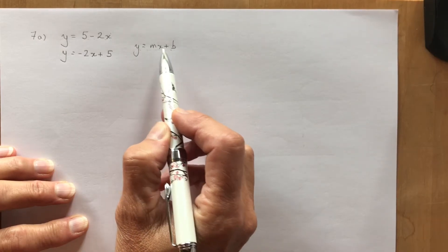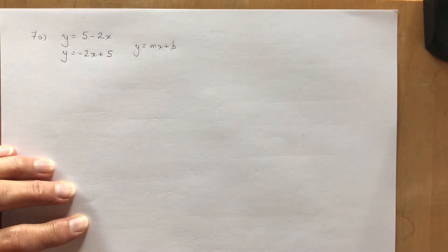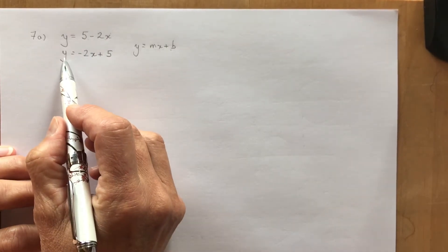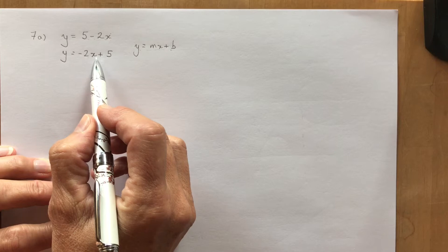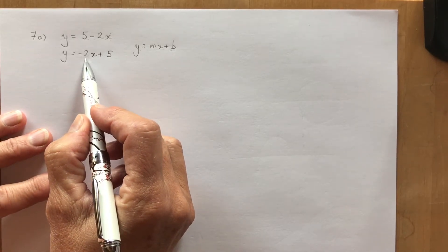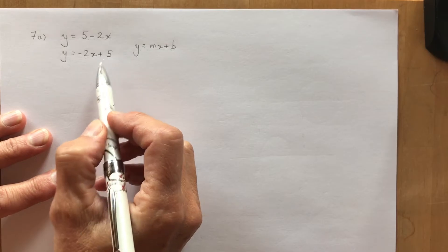If we look at this format which you should be very familiar with from grade 9 math, y equals mx plus b, that is the equation of the line in slope y-intercept form. So what you want to do is rearrange this equation first so I now have y equals minus 2x plus 5, and now I know that the slope is minus 2 and the y-intercept is 5.